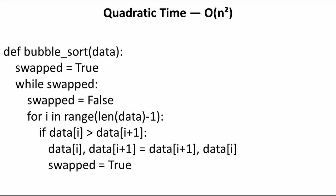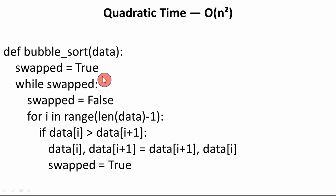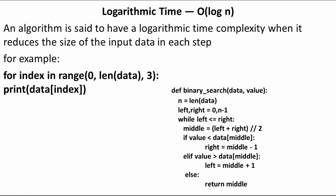Bubble sort is a classic example of quadratic time complexity. To sort a list of data items, bubble sort always uses two loops — one inside the other, such as a for loop inside a while loop. Whenever there is a nested loop, the time complexity will always be O(n²), because the inner statements execute n × n times. Any program with a nested loop has quadratic time complexity.